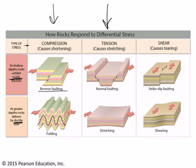The next possibility is tension — stretching of the rocks in opposite directions. If the rocks are behaving brittlely, this will produce normal faults, where the upper block of rock slides down relative to the lower block. If the rocks are behaving ductilely, the rocks will just stretch out, kind of like silly putty or bread dough.